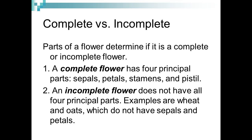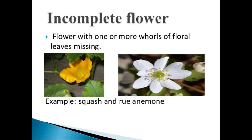But in some flowers like cucumber, bottle gourd, and papaya, not all four whorls are present — one whorl will be missing. If a flower contains only three whorls, then it is called an incomplete flower.